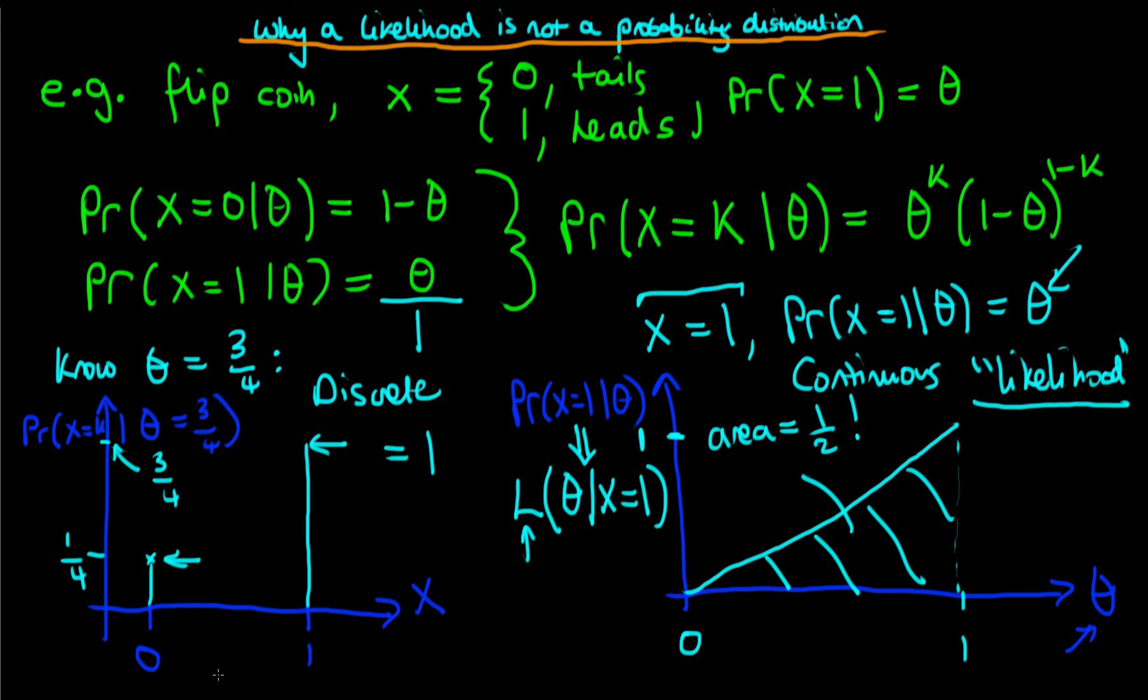So to summarize, we can see two different cases here. The first one was where we assumed that we knew the probability of the coin landing heads up. In other words, we held theta constant here, the parameter, and we varied the data. So here we varied x. We looked at the two possible x's that could have resulted from throwing the coin. That's what we mean by varying x here. And when we did this, we saw that we got a valid probability distribution.